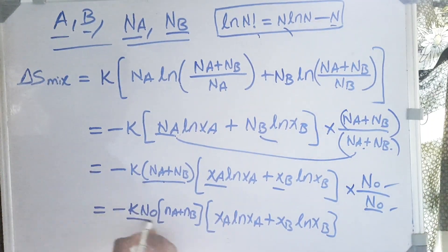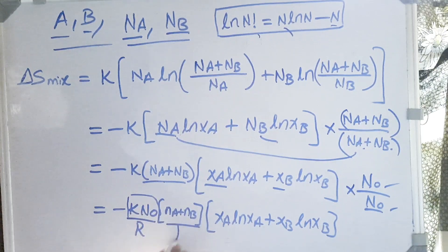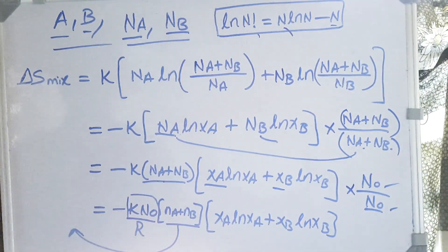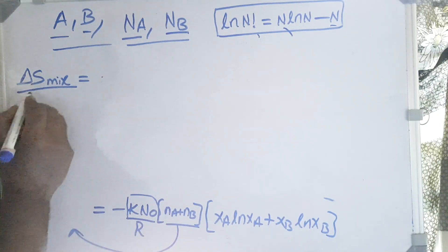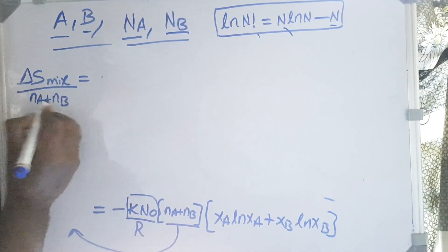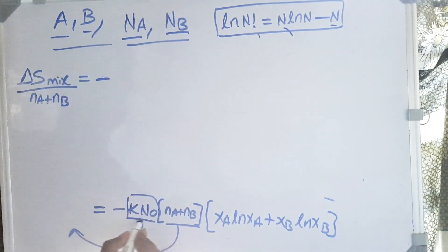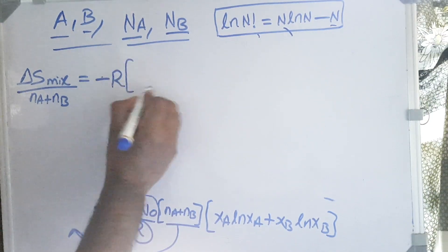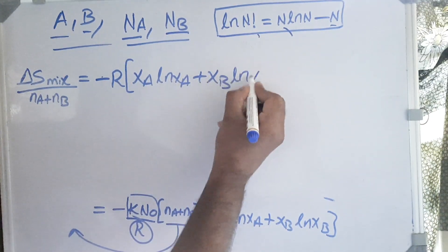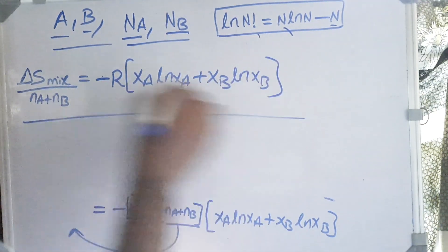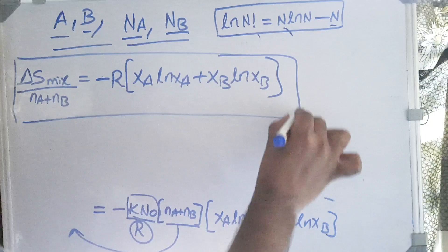If we take the total number of moles to the other side, which will give us delta S mixing per mole, molar delta S mixing. So delta S mixing divided by (na + nb) equals -K·N₀ times (XA ln XA + XB ln XB). We can write K·N₀ as R. So this is the equation that we are looking for.